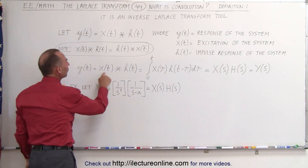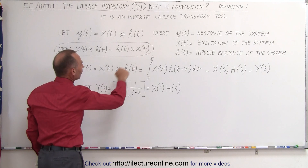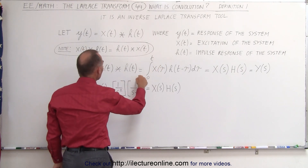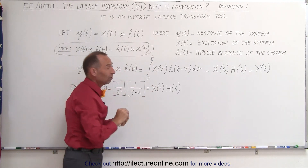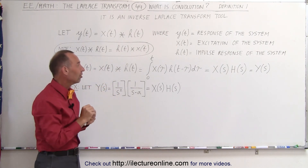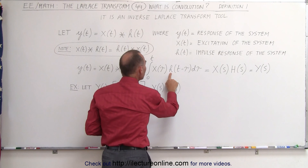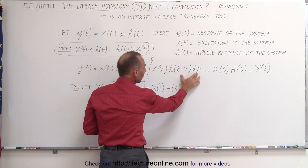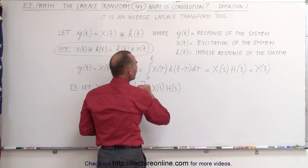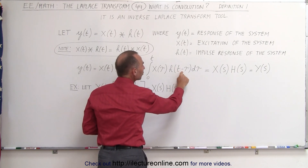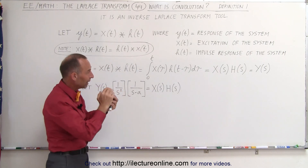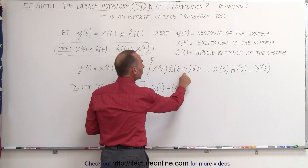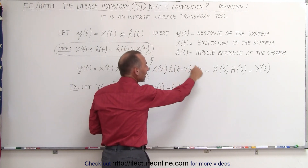Mathematically, when we convolve these two functions — x being the excitation of the system and h being the impulse response of the system — notice how we mathematically define it. It is the integral of the first function, which is the excitation of the system, the current or voltage input, multiplied times h. Instead of writing it with the t variable, we've taken the dummy variable tau, so that's now our variable. The limit is from 0 to t, and notice that we have it as t minus tau — so first we take the time variable, make it a negative time variable, and write it as t minus tau. t of course in this case is just a constant inside the integral sign.